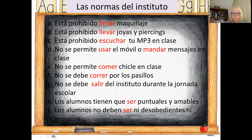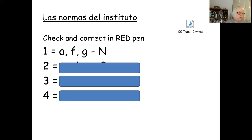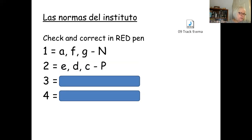Here is the slide again with the A to I letters. Hopefully you've now done the task — check and correct in red pen. The first person mentioned A, F and G: wearing makeup, not running in the corridors, and not leaving school during the school day. They thought those were negative. The second person mentioned E, D and C: not allowed to eat gum in class, not allowed to use your mobile or send messages in class, and not allowed to listen to music in class. They thought those were positive — good ideas.